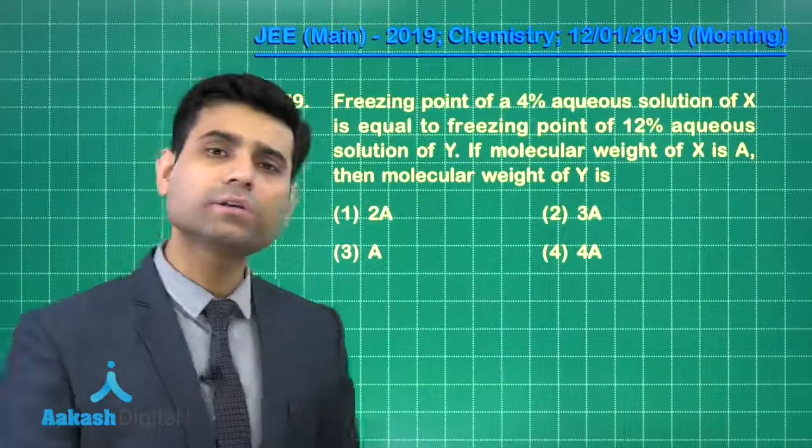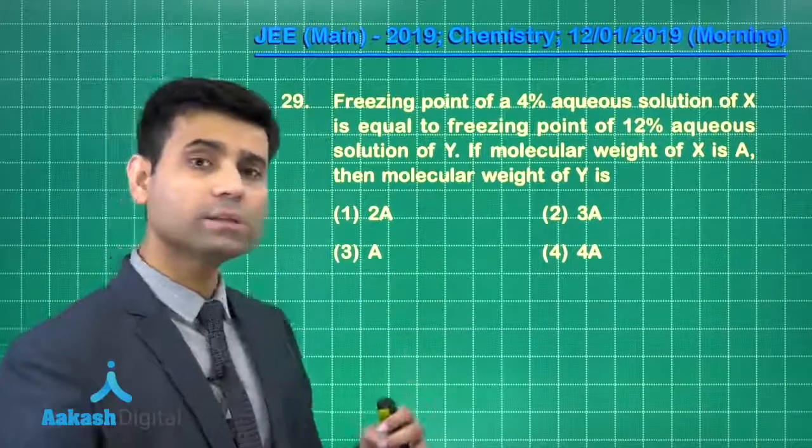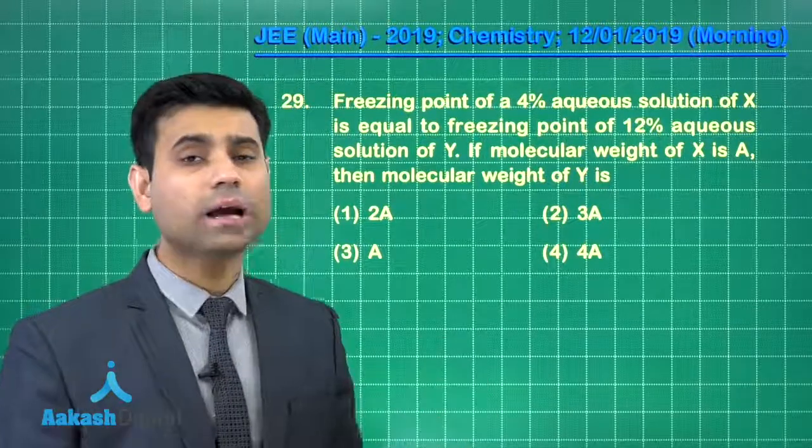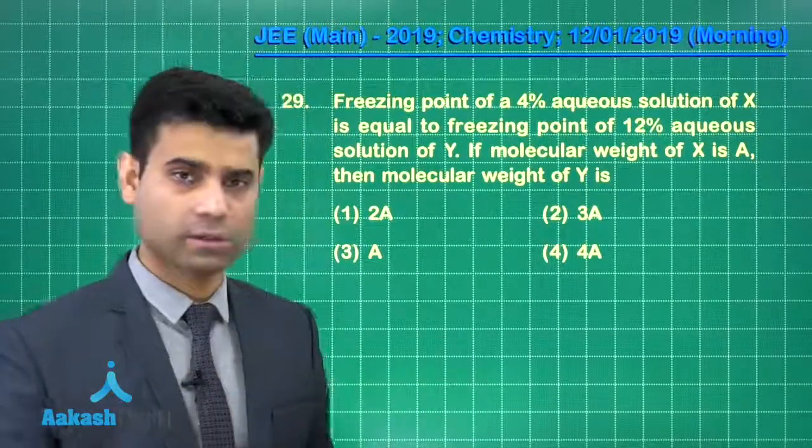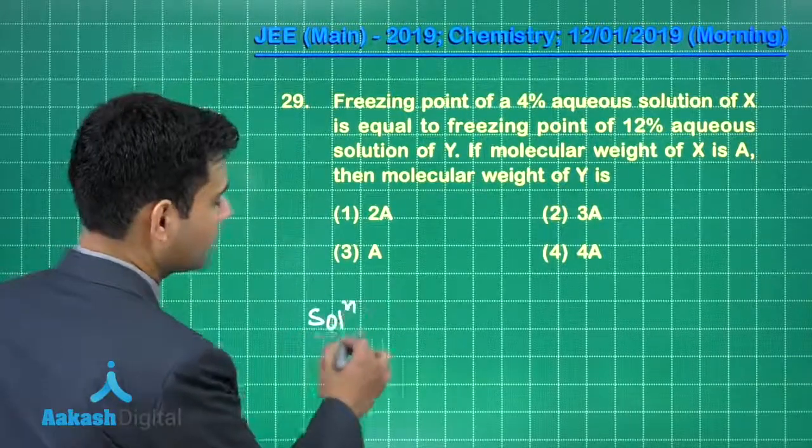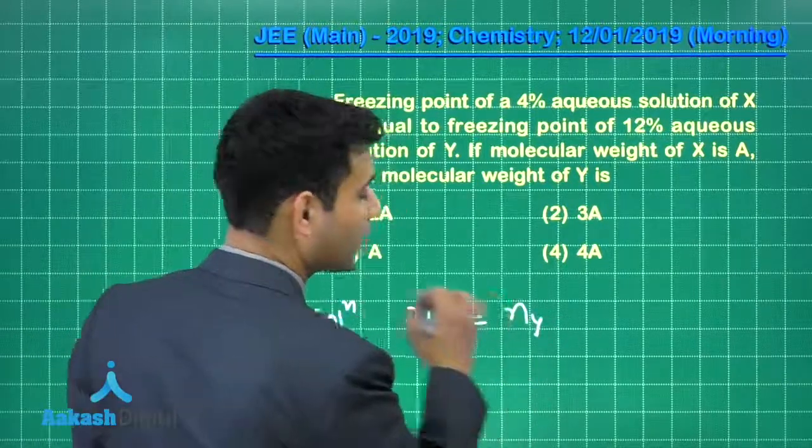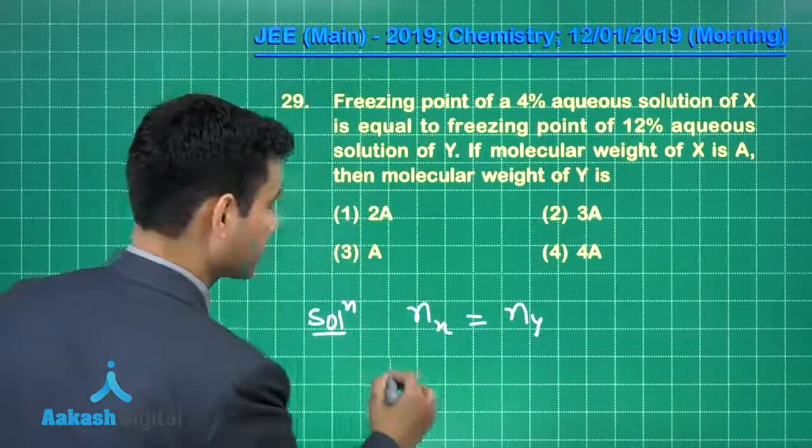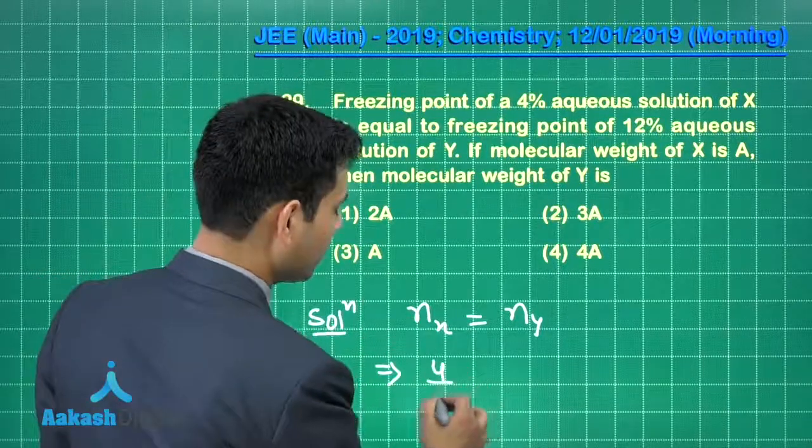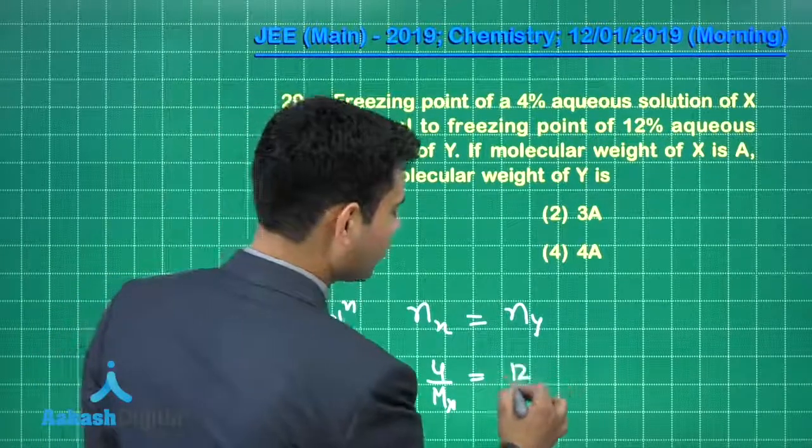The molarity of both solutions should be same, or if I talk about the number of moles of solute in both solutions should be same, assuming 100 mL of solution. So we can simply write that number of moles of X should equal number of moles of Y, assuming 100 mL of solution. So number of moles of X will equal 4 by molar mass of X. This equals 12 by molar mass of Y.